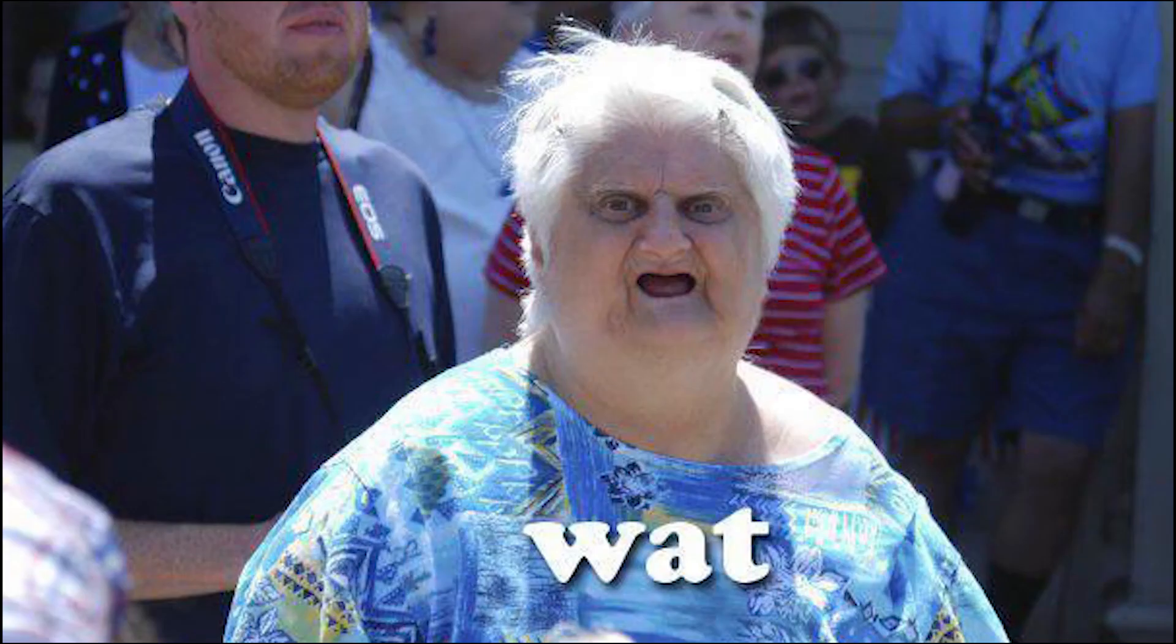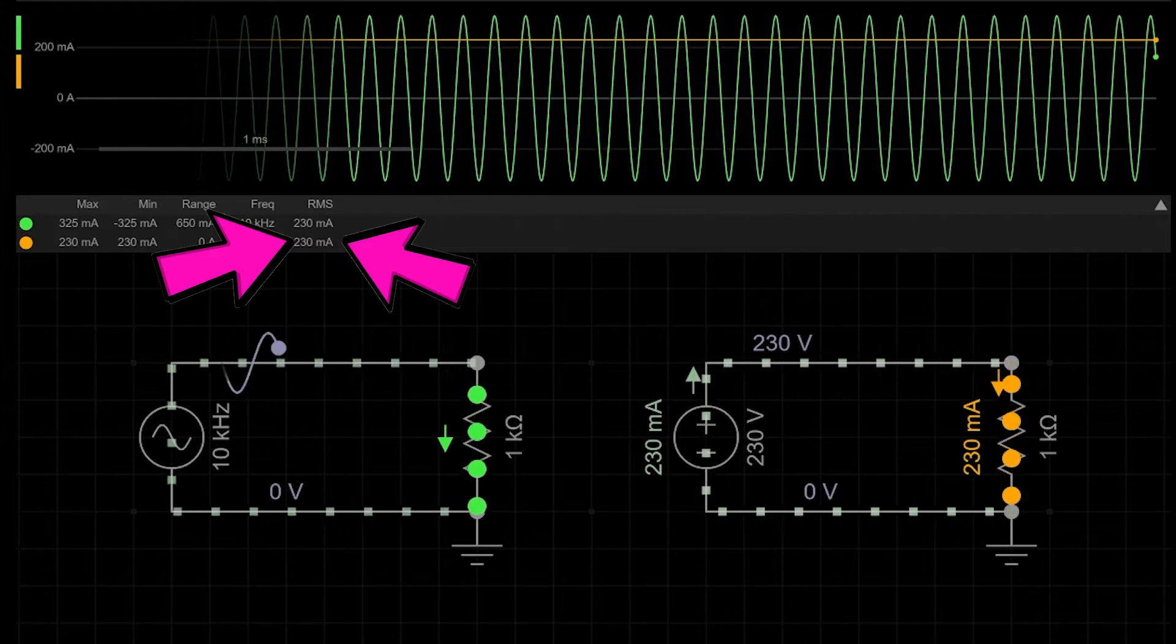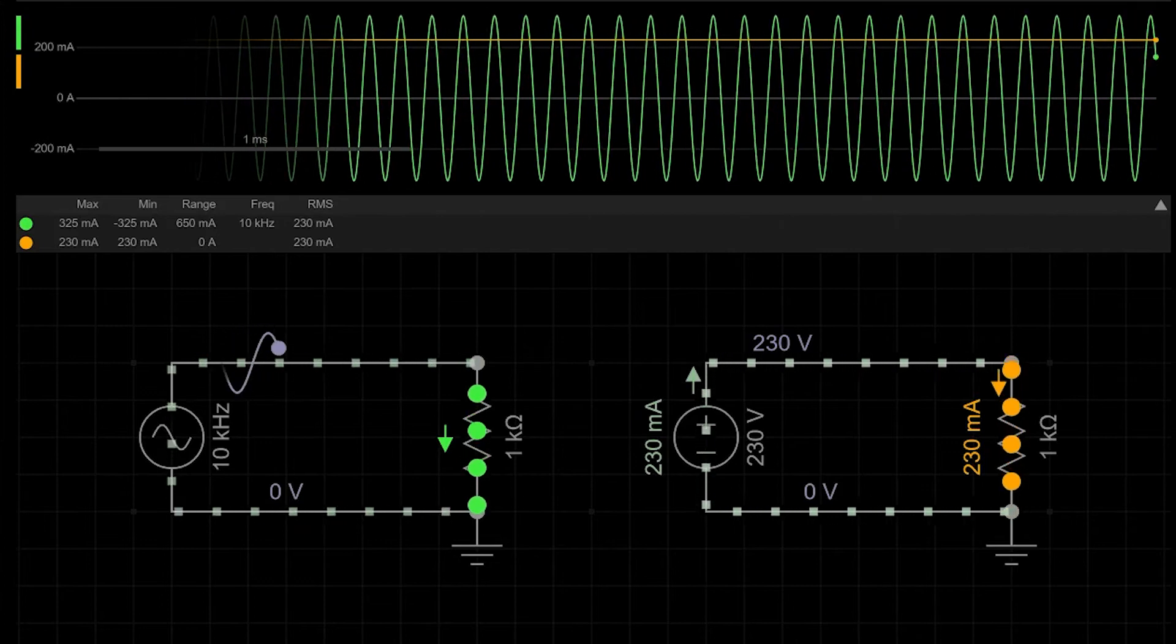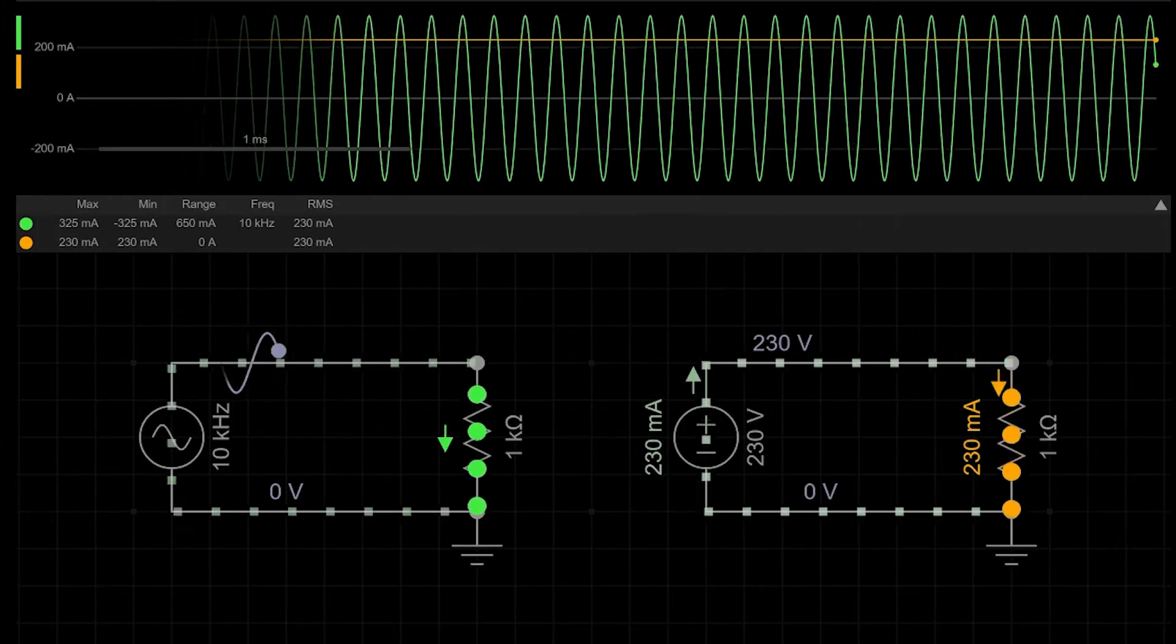But what does it mean? How can we understand root-mean-square value? From a physics point of view, RMS value means that it delivers the same power to the load as a DC signal of the same value. For example, you take a resistor and apply to it 230V AC and 230V DC. Same power will be delivered to the resistor. It will heat up to the same temperature.